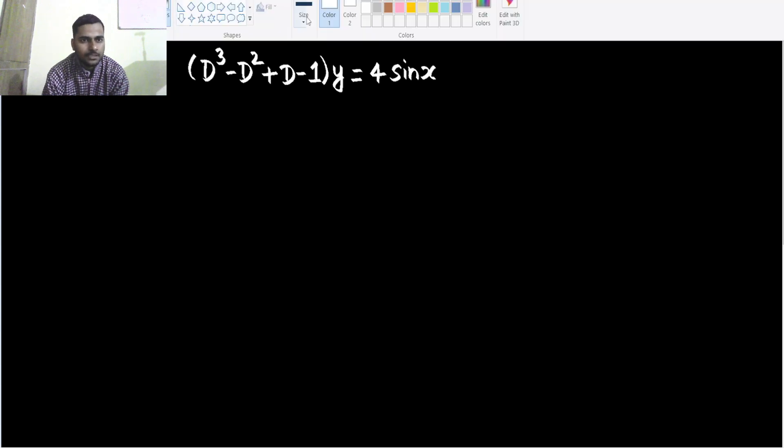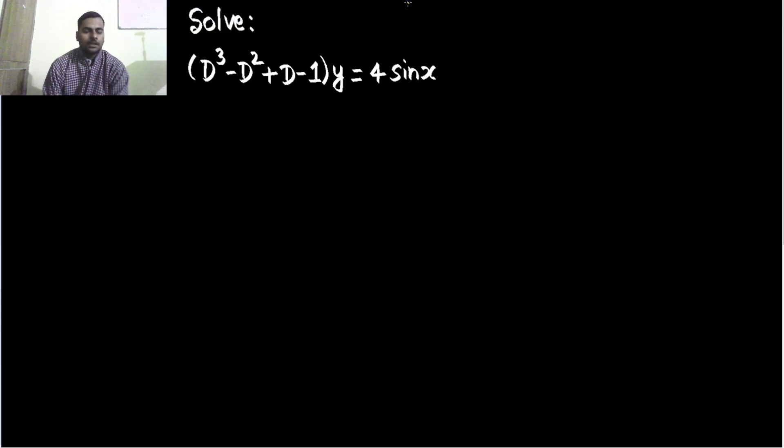How can we go ahead with this? First of all we have to find the complementary function. For that we write auxiliary equation and in auxiliary equation just replace this D by m. So you get m³ - m² + m - 1 now equate it to 0.